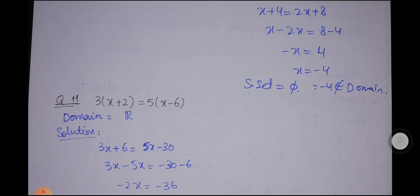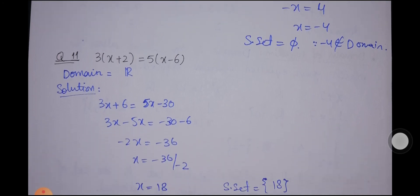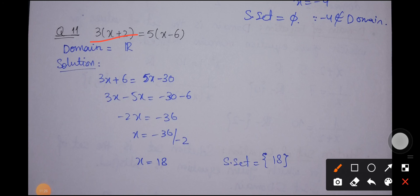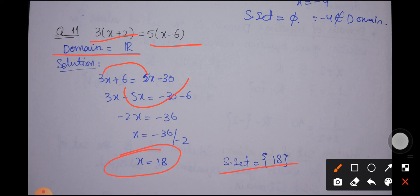Next, question number 11 from the exercise. It is a simple linear equation. The domain is the set of all real numbers since there is no denominator. For the solution, we distribute 3 to get 3x plus 6 and 5x minus 30, then move 5x to the left and 6 to the right, giving x equals 18. Since 18 is in the domain, the solution set is the singleton set {18}.